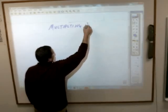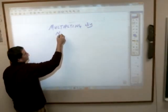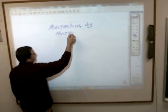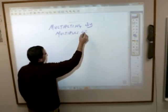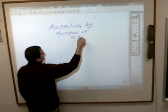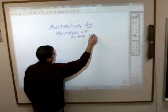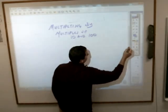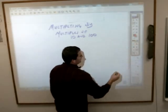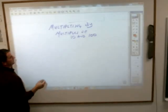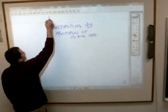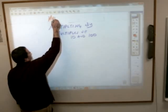Multiplying by multiples of 10 and 100. This is going to be under multiplication.